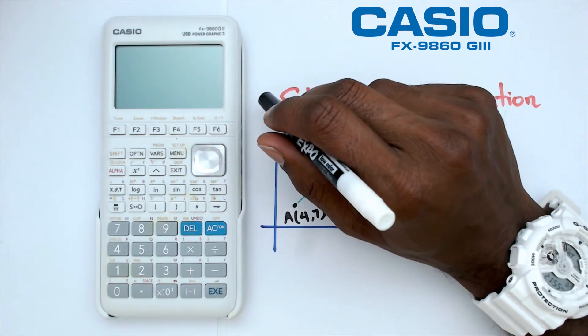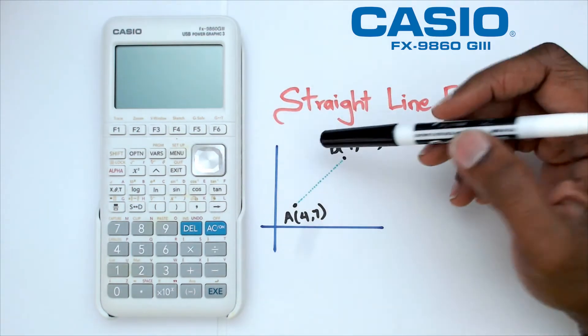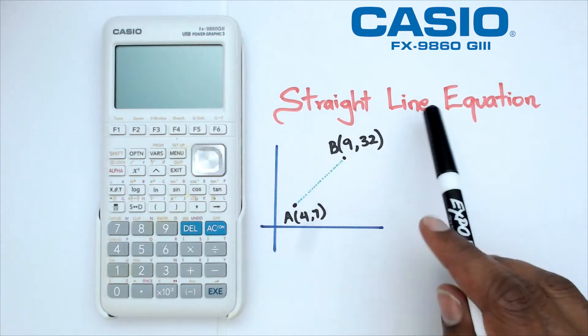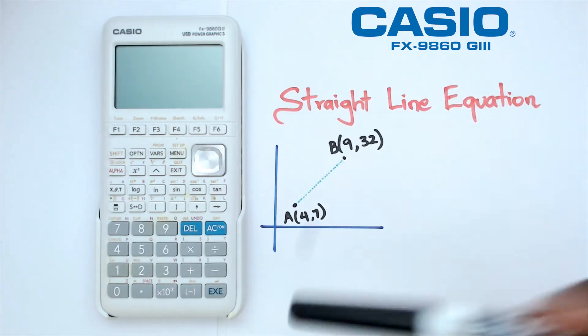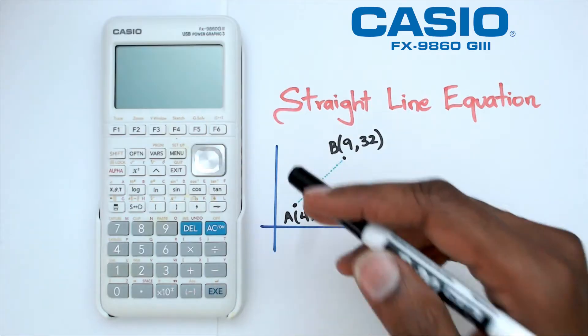Hey folks, welcome to another how-to Casio video. In this video we're going to be looking at how to get an equation of a straight line given two points on this particular calculator. So without further ado, let's get started.